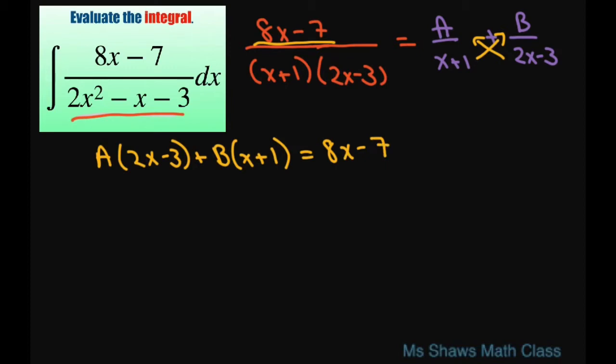Alright, from here, let's let x equal 3 halves. If we let x equal 3 halves, it's going to eliminate my A, because that's going to give me a 0, and that's why I chose that. So we have B times 3 halves plus 1 equals 8 times 3 halves minus 7.